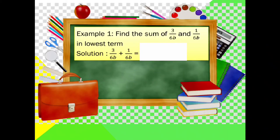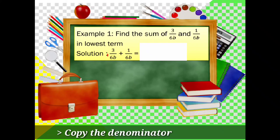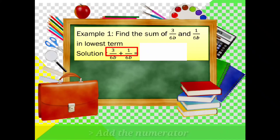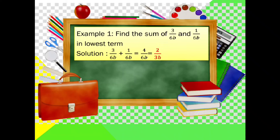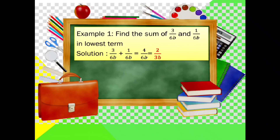Example number 1: Find the sum of 3 over 6b and 1 over 6b in lowest term. Since the denominators are the same, copy the denominator 6b and add the numerators: 3 plus 1 is 4 over 6b. Find the lowest term by dividing both numerator and denominator by 2. The answer is 2 over 3b.